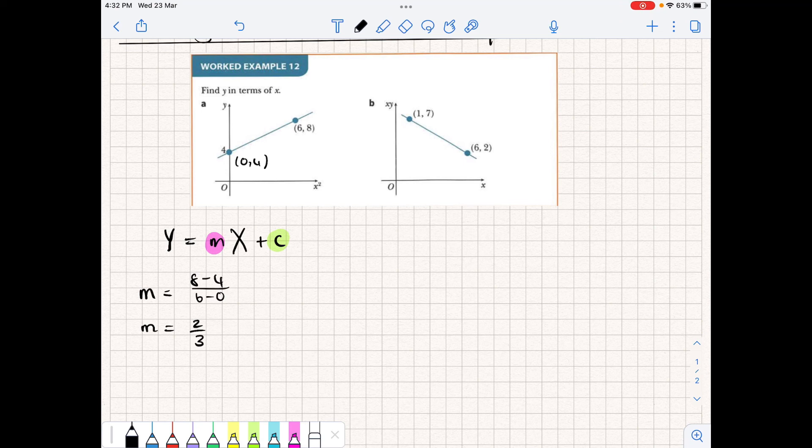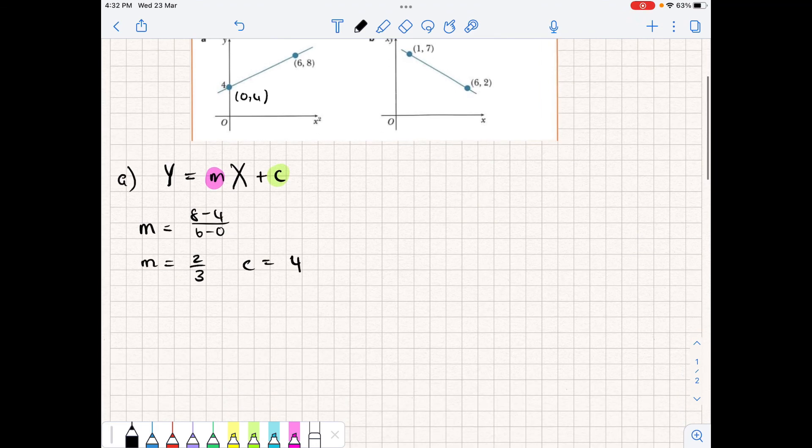Now in the first one, we can actually see that the y-intercept is 4, so there's no need to go and calculate it. So c immediately is equal to 4. So we can now finish our nonlinear version of the straight line equation, Y = 2/3 times X + 4.